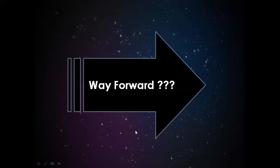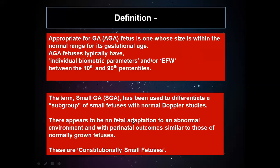Having Doppler and biometric findings, we now need to define segregation of fetal growth types. A fetus appropriate for gestational age (AGA) has individual parameters or total calculated weight within the 10th to 90th percentile. SGA refers to a subgroup of small fetuses with normal Doppler studies showing no features of fetal adaptation — these are constitutionally normal fetuses.